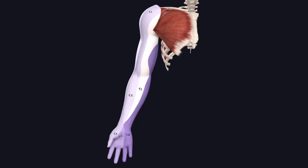Next we'll see about the dermatomes of the upper limb. The dermatome is the area of the skin supplied by a single segment of the spinal cord. The upper limb develops as a lateral outgrowth of the body wall opposite the lower four cervical and first thoracic spinal segments. Therefore the overlying skin of the upper limb is supplied by the ventral rami of C5, C6, C7, C8, and T1 spinal nerves through the brachial plexus.